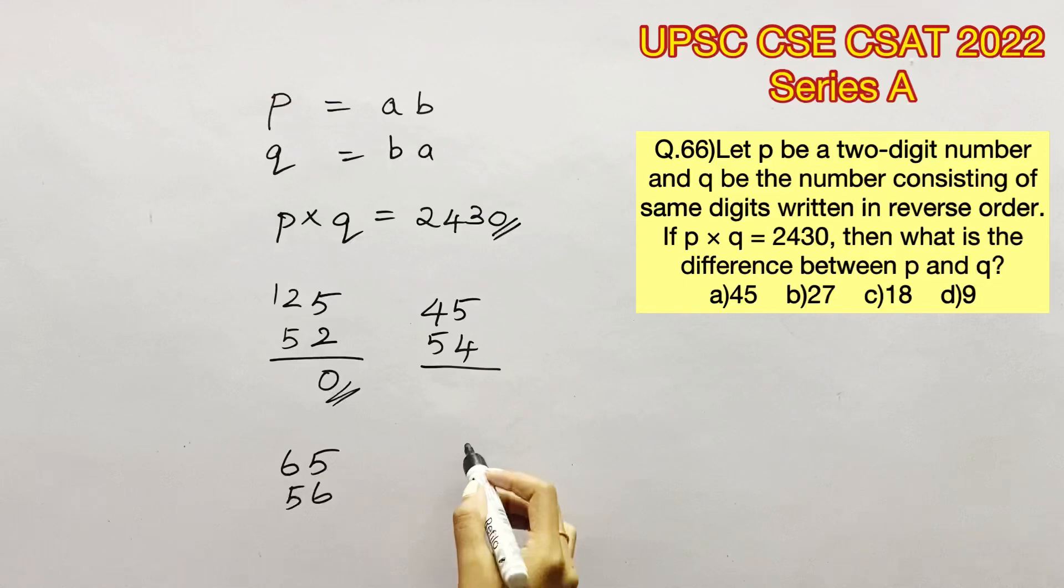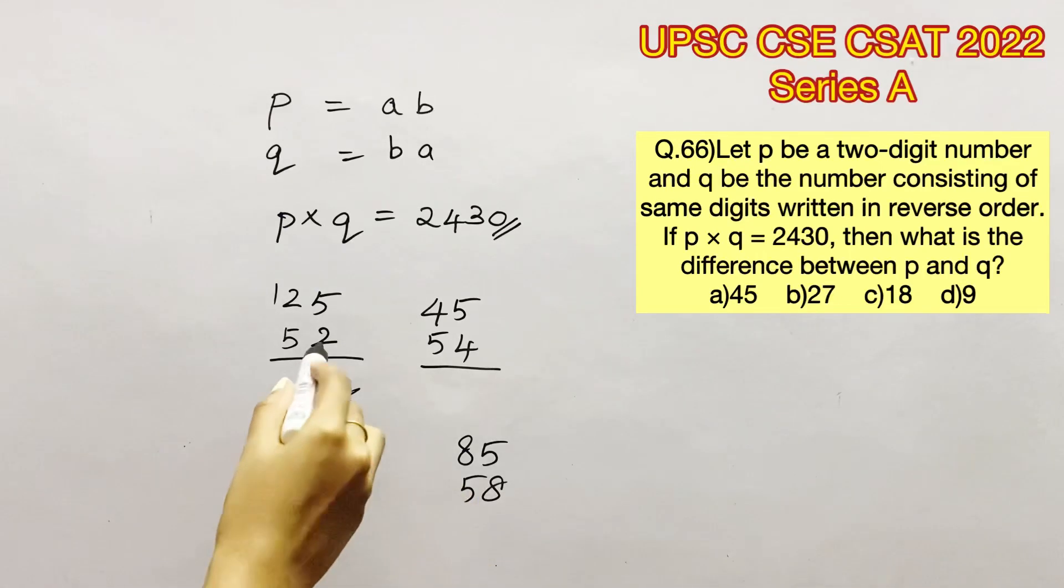With this, we can easily form the values that P and Q can take because they are just going to interchange their numbers between them. So they will be 45 and 54, 65 and 56, 85 and 58.